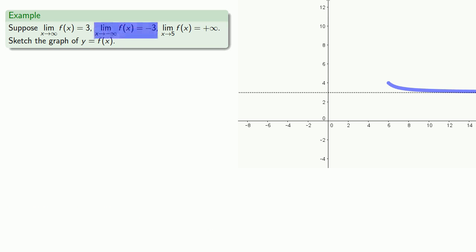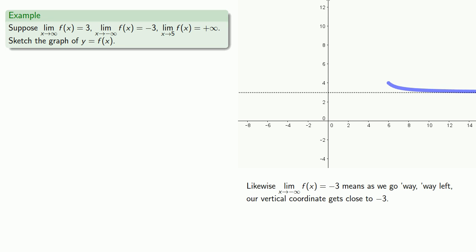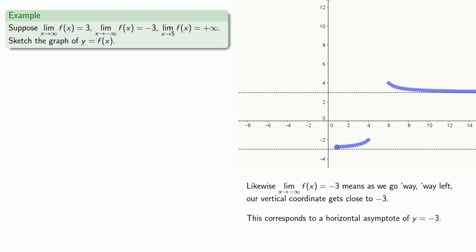Likewise, the limit as x goes to minus infinity of f of x equals negative 3 says that as we go way off to the left, our vertical coordinate gets close to negative 3, and this corresponds to having a horizontal asymptote of y equals negative 3.